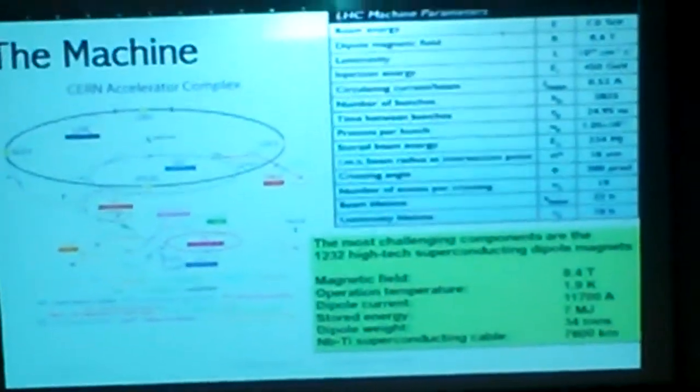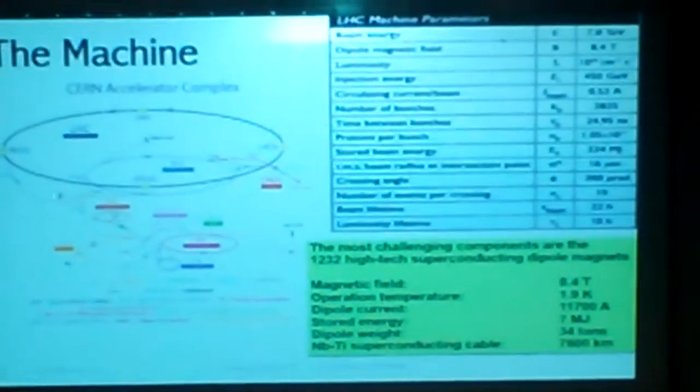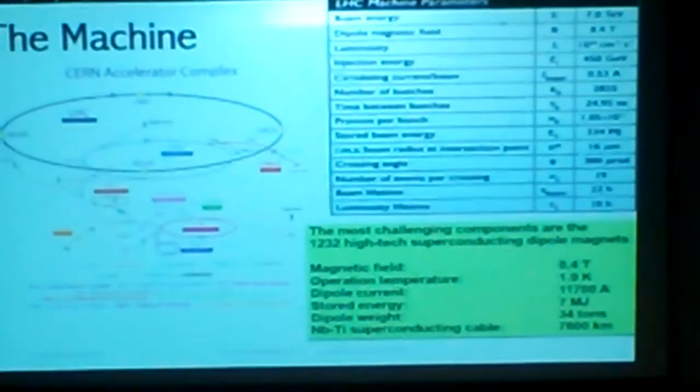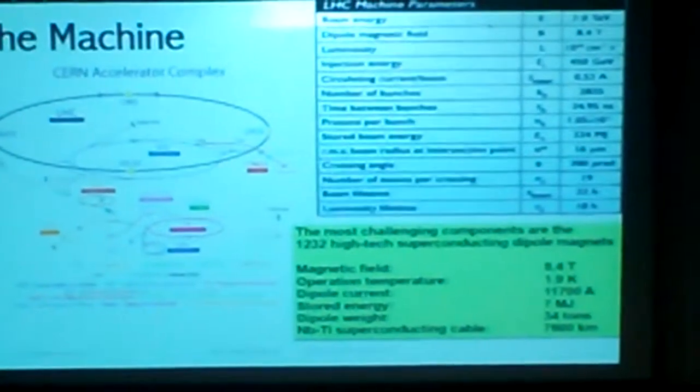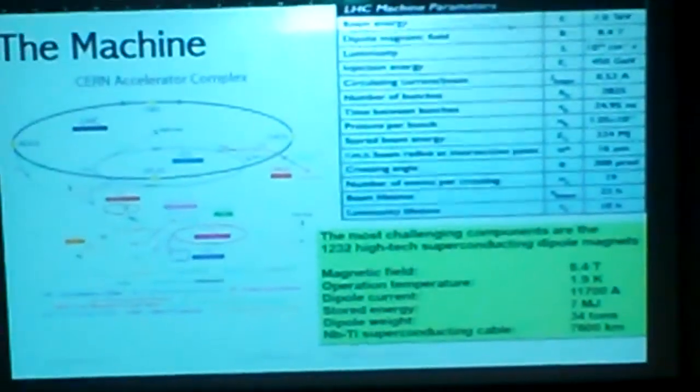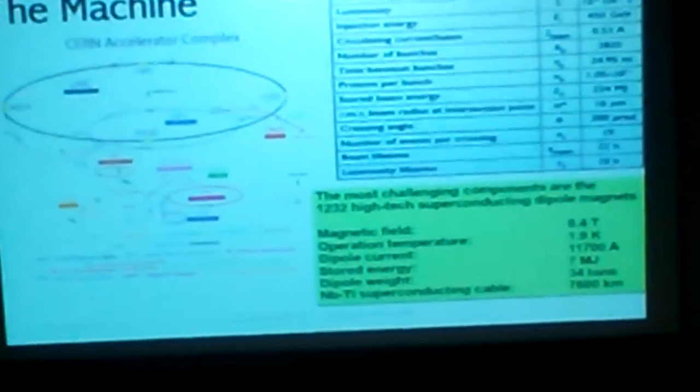A little bit about the accelerator: the maximum energy it can go is 14 TeV. But in 2008 they had an explosion, so they had to take out a bunch of magnets and can't operate it at full energy — something bad might happen. The way you move these protons at very high speed is that you accelerate them with electric fields, and you also steer them with superconducting magnetic fields — a lot of them, like thousands of magnets — and it makes them go very fast.